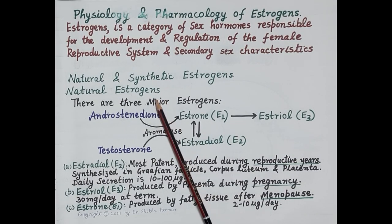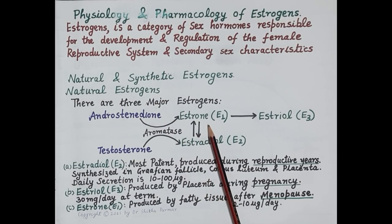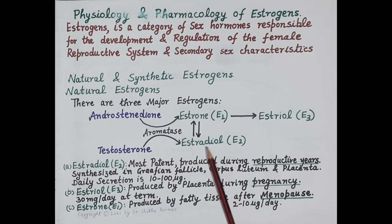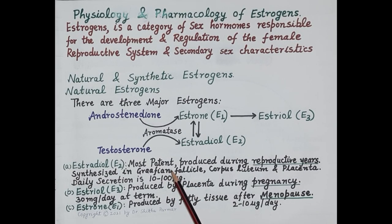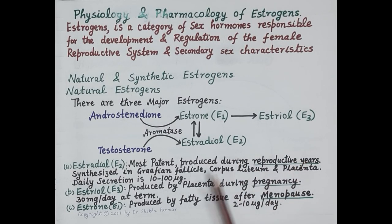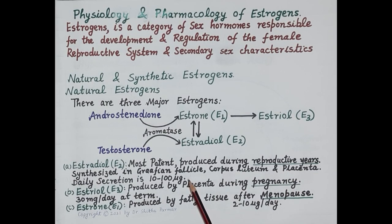There are three main natural estrogens produced in the body: Estrone designated as E1, Estradiol designated as E2, and Estriol designated as E3. Estradiol is the most potent of all the estrogens and is produced during the reproductive years of a woman. It is synthesized in the Graafian follicle in the ovaries, corpus luteum, and the placenta, with a daily secretion of 10 to 100 micrograms depending on the phase of the reproductive cycle.